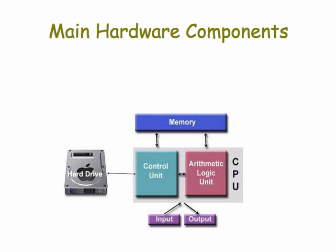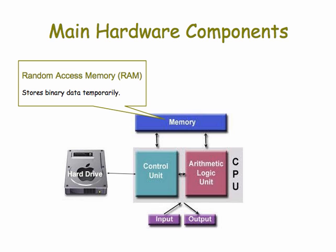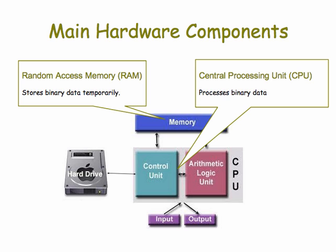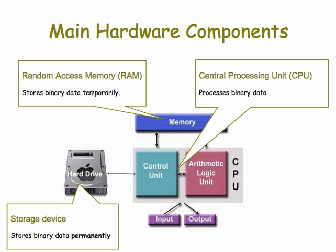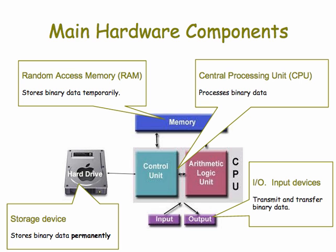First, a quick review of the main hardware components. The random access memory is where computers store the programs and the data. The central processing unit performs the processing under the guidance of a machine language program. Storage devices are things like hard drives and flash drives that can store data permanently. And the input-output devices include devices that allow the computer to communicate with other computers or with humans.